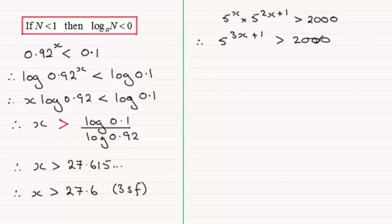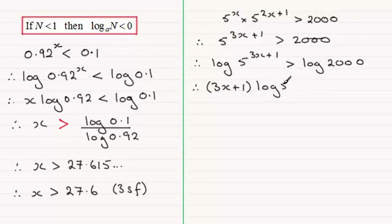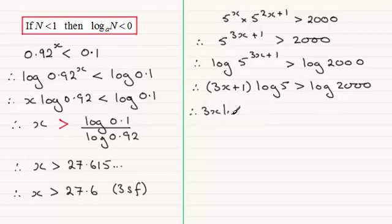Log both sides to any base — I'm going to suggest base 10. If we do that, we're going to have the log in base 10 of 5 to the power 3x plus 1, and that's going to be greater than the log in base 10 of 2000. Then by the power rule, bring out the 3x plus 1 to the front of log 5. Don't forget to put that in brackets. And then you multiply that with log of 5 in base 10, and that's going to be greater than the log of 2000 in base 10. At this stage, it's best just to expand the bracket. So you've got 3x times log of 5, and then plus the log of 5, and that's greater than the log of 2000.